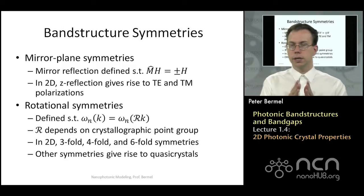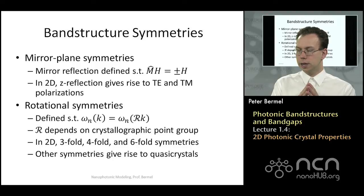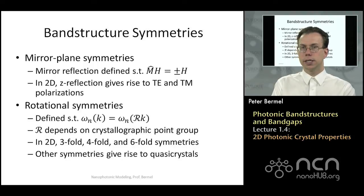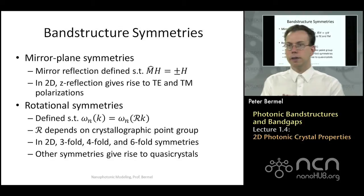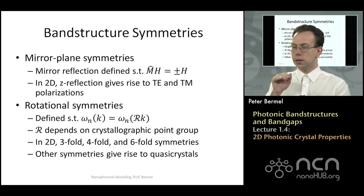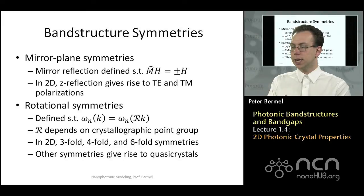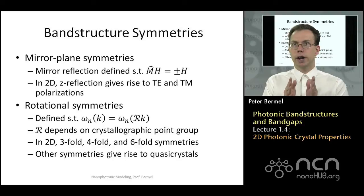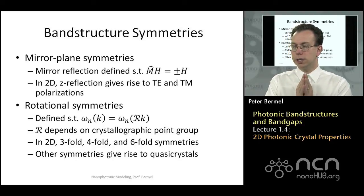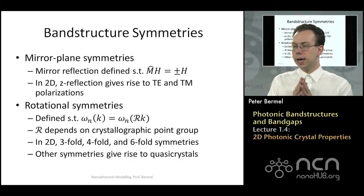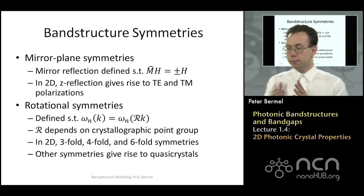Mirror plane symmetry for 2D photonic crystals is defined with respect to the Z plane, where X and Y vary and Z is held constant. The first symmetry, where H is the same as its mirror image, is called the TE mode. The one where the mirror operator gives minus H is called the TM mode. For every 2D system, you always have two sets of modes, TE and TM, which can be completely separated and treated distinctly. When you send light in, you'll always have one or the other, or some superposition thereof.